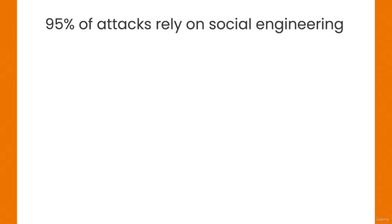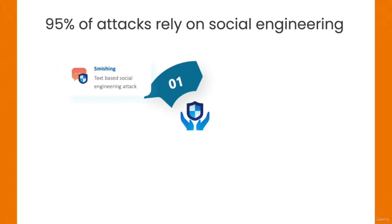Did you know that 95 percent of cyber attacks rely on social engineering, and did you know that humans are the weakest link in the security chain? Welcome to the course. We're going to start off with smishing, which is a popular tech-based social engineering attack that has been successfully used by attackers around the world to infiltrate mobile devices and get people's personal information as well as their credentials.